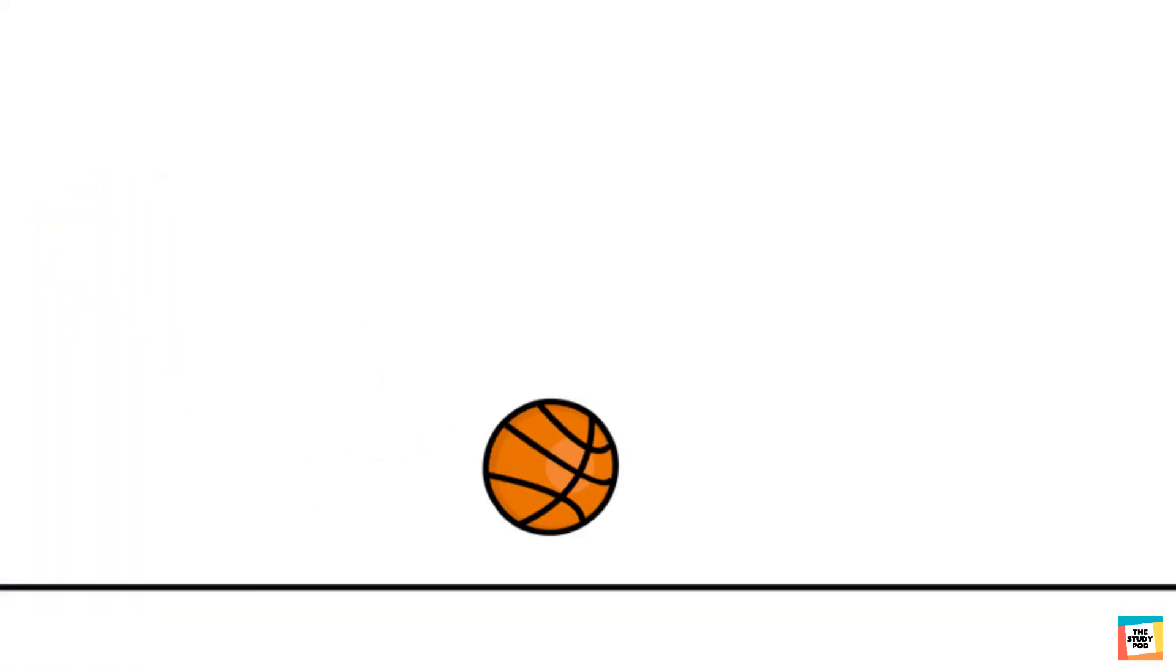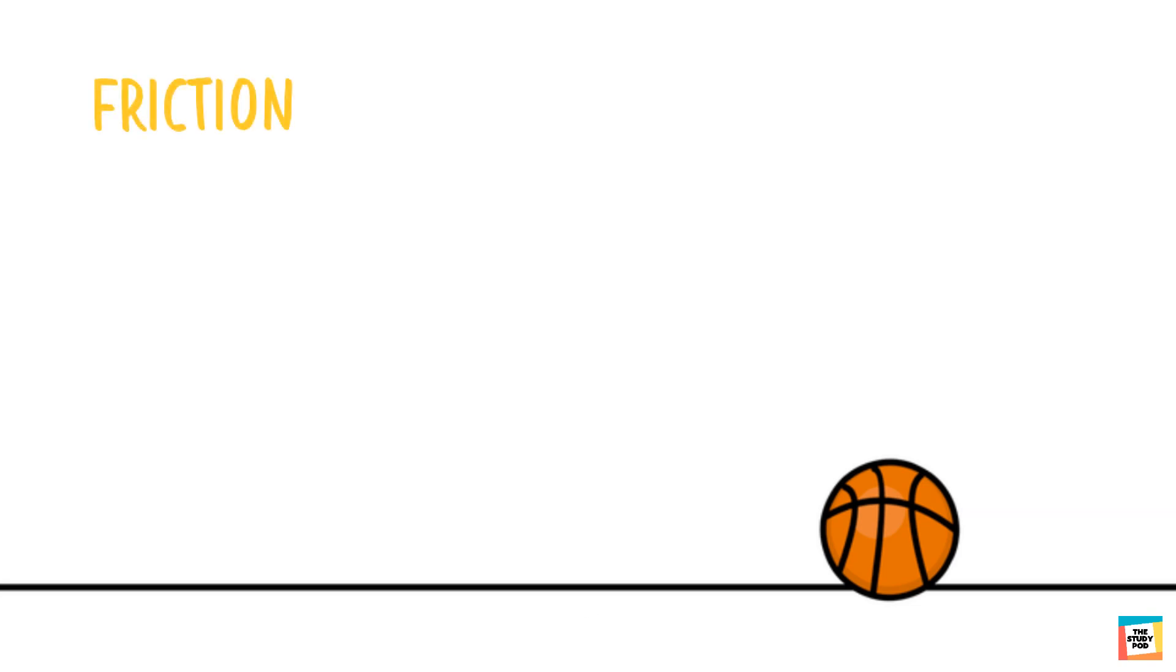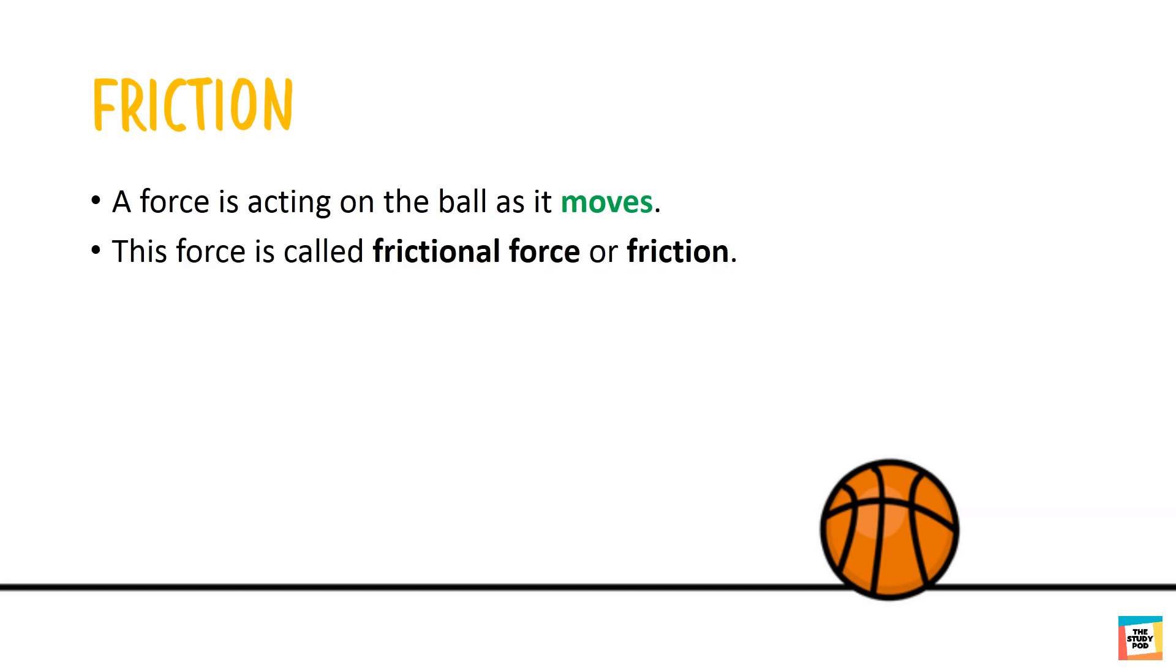Toss a ball on the ground. After bouncing for some time the ball will slow down and come to a stop. Why is that so? A force is acting on the ball as it moves. This force is called frictional force or friction. It makes the moving ball slow down and eventually stop.